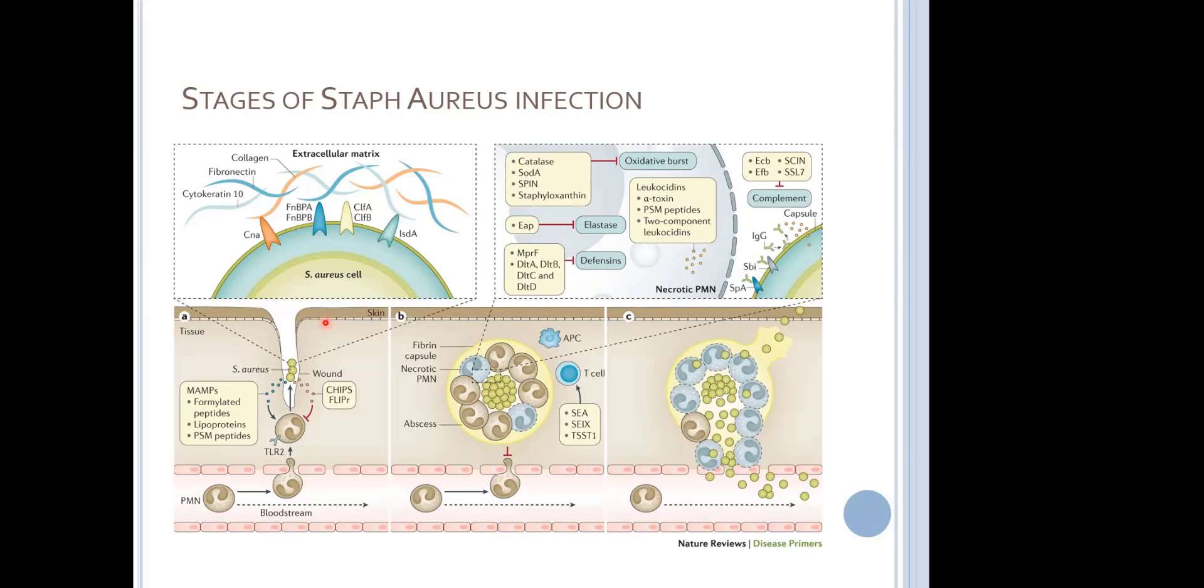Let's assume we got a paper cut here and there was some staph nearby. It's going to migrate into the wound, and the skin, knowing there's a wound, will actually start amping up the amount of antimicrobial peptides and other targets here. But staph has a number of virulence factors that it's going to use to try to neutralize those.